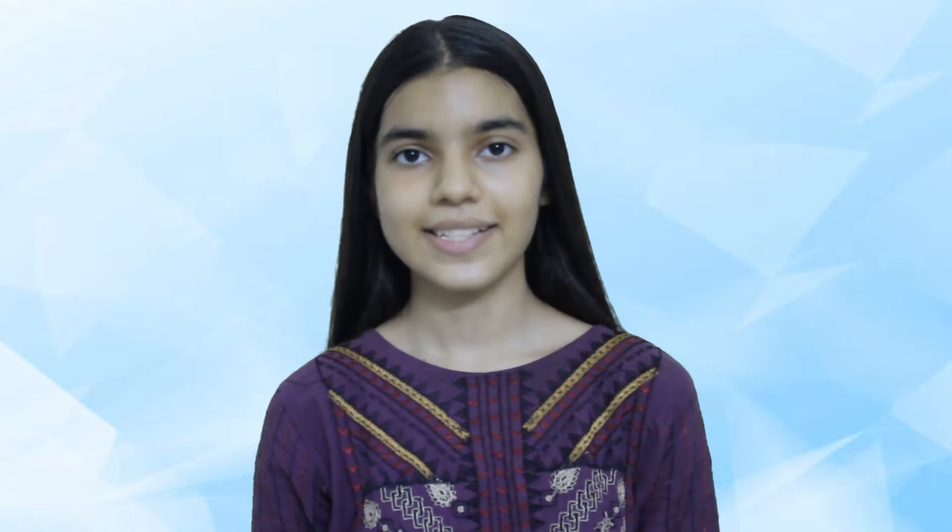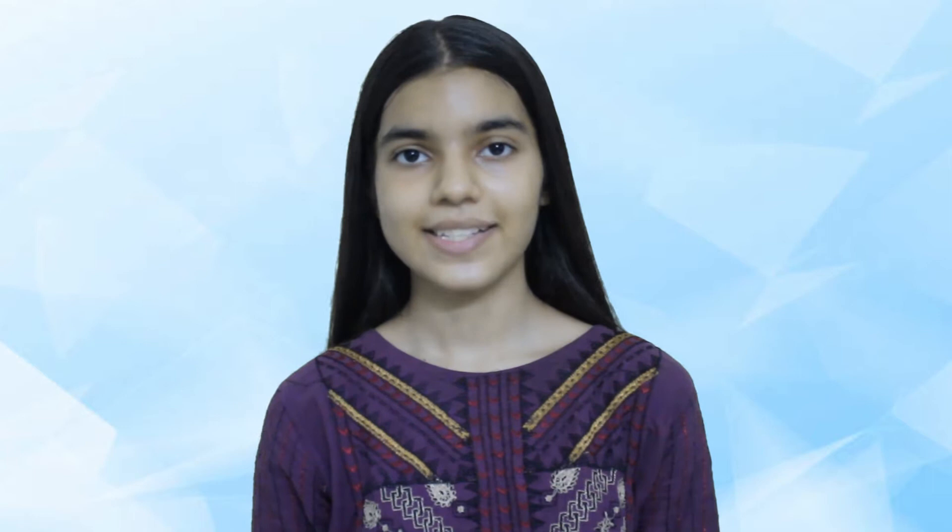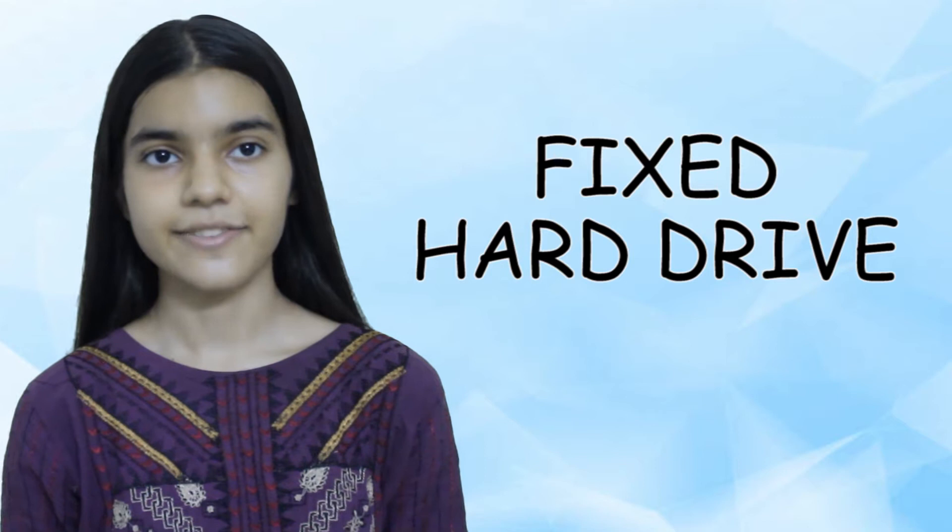Hard drives have a very large storage capacity of up to 1TB and can be used to store vast amounts of data. Hard drives are random access devices and can be used to store all types of files, including huge files such as movies. Data access speeds are very fast. Data is stored inside a hard drive on rotating metal or glass disks called platters.